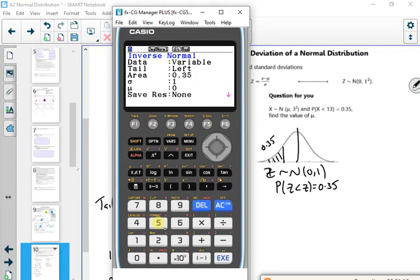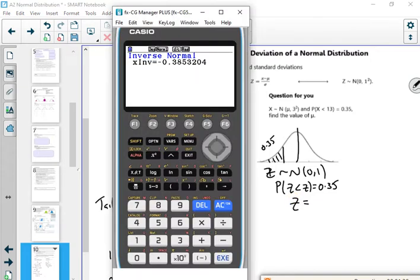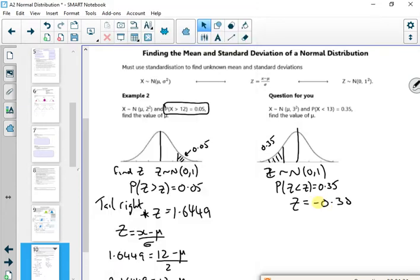0.35. When this lesson's done, I'm just going to go home. I can't deal with it. So that's giving me a z-value of, my calculator's gone, minus 0.385.